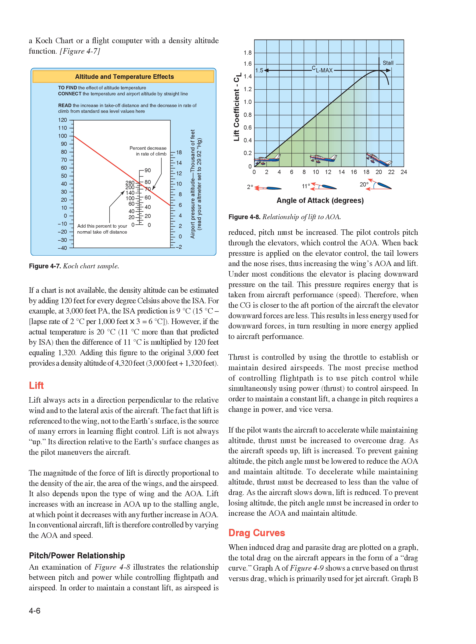Thrust is controlled by using the throttle to establish or maintain desired airspeeds. The most precise method of controlling flight path is to use pitch control while simultaneously using power (thrust) to control airspeed. In order to maintain a constant lift, a change in pitch requires a change in power, and vice versa. If the pilot wants the aircraft to accelerate while maintaining altitude, thrust must be increased to overcome drag. As the aircraft speeds up, lift is increased, so the pitch angle must be lowered to reduce the AOA and maintain altitude. To decelerate while maintaining altitude, thrust must be decreased, and as the aircraft slows and lift is reduced, the pitch angle must be increased to maintain altitude.